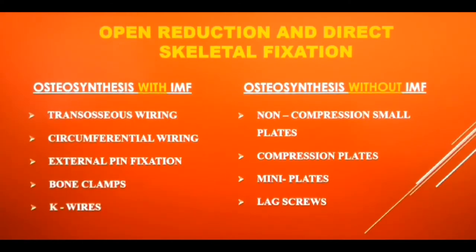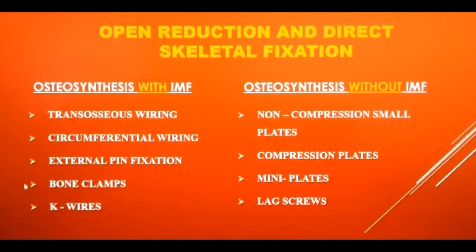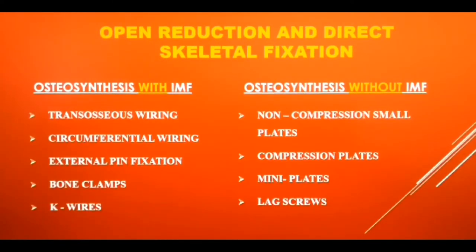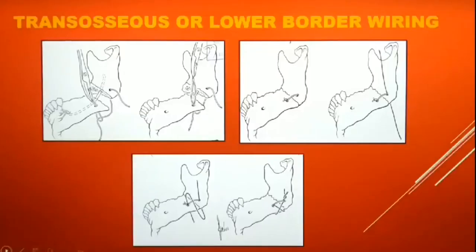Osteosynthesis can be done in two ways. Some techniques require an additional intermaxillary fixation for immobilization — even though a bone implant is placed, it is followed by a period of IMF. Whereas other techniques are self-sufficient to provide both stabilization and immobilization of the fracture site, thus eliminating the need for intermaxillary fixation. Today's lecture covers osteosynthesis with intermaxillary fixation.